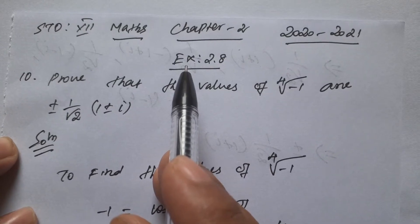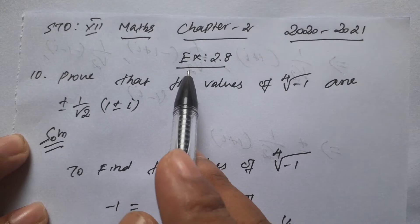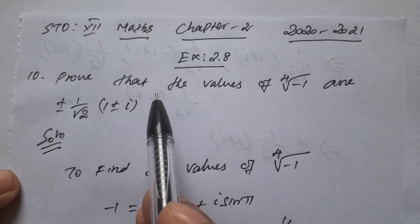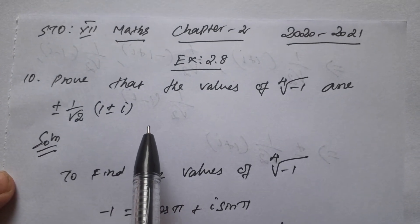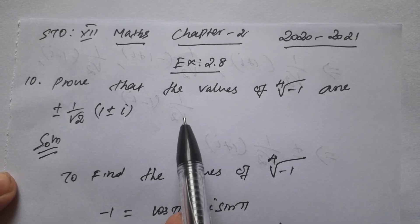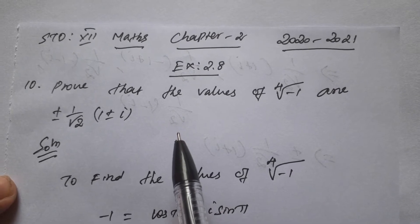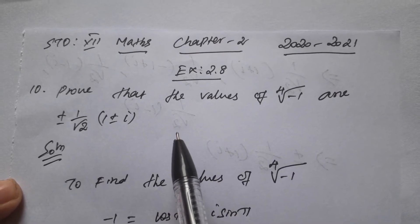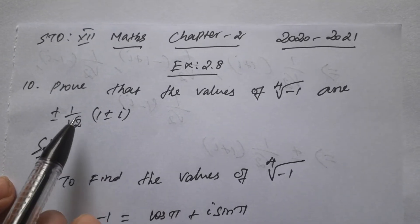Hi students, 12th standard, Maths Chapter 2, Complex Numbers, Exercise 2.8, 10th sum. So 9 sums complete. One or two is the last sum, so then the unit will be complete. Exercise 2.9 has only one word multiple choice questions, so the chapter is over. So let's clear up the last sum, last but not least.